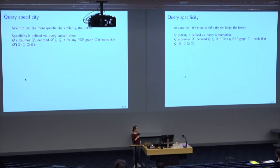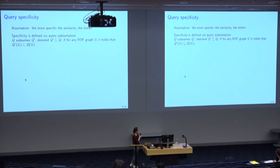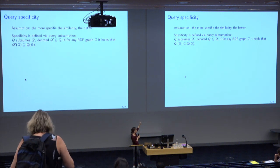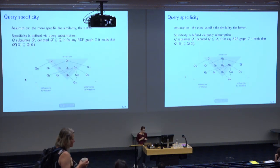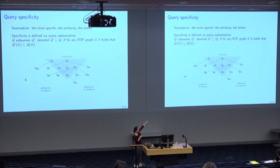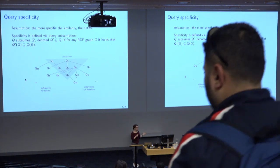We can formally capture specificity using the classic notion of query subsumption. A query Q subsumes query Q Prime if, for any RDF graph, the answer set of Q Prime is contained in the answer set of Q, making Q Prime more specific than Q. Using query subsumption, we can organize all comparison queries into a partial order. A similarity query could become more and more specific until it fits only one entity and becomes a difference query, or fits neither.